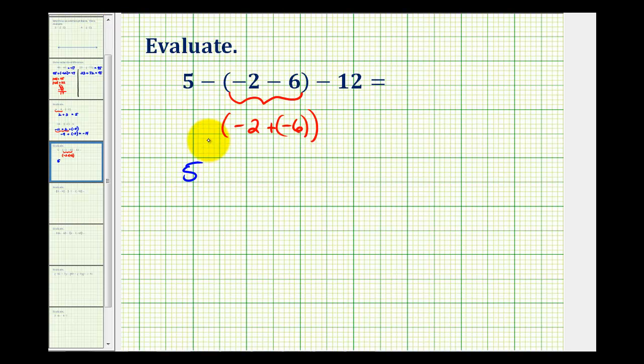So we'd have five minus all of this simplified to negative eight, and then minus twelve. Now let's rewrite this as addition. So five minus negative eight is equivalent to five plus positive eight, and then minus twelve is equivalent to plus negative twelve.